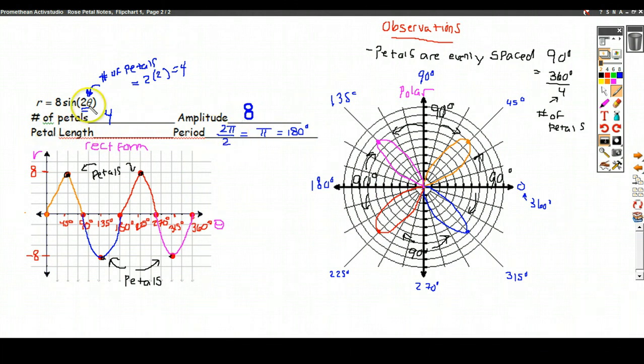And the petal length here is 8. The distance that you walk out is 8, and of course, that corresponds to our amplitude here. The amplitude is really mapped onto the petal length over here. Okay, so that's what I wanted you to observe.